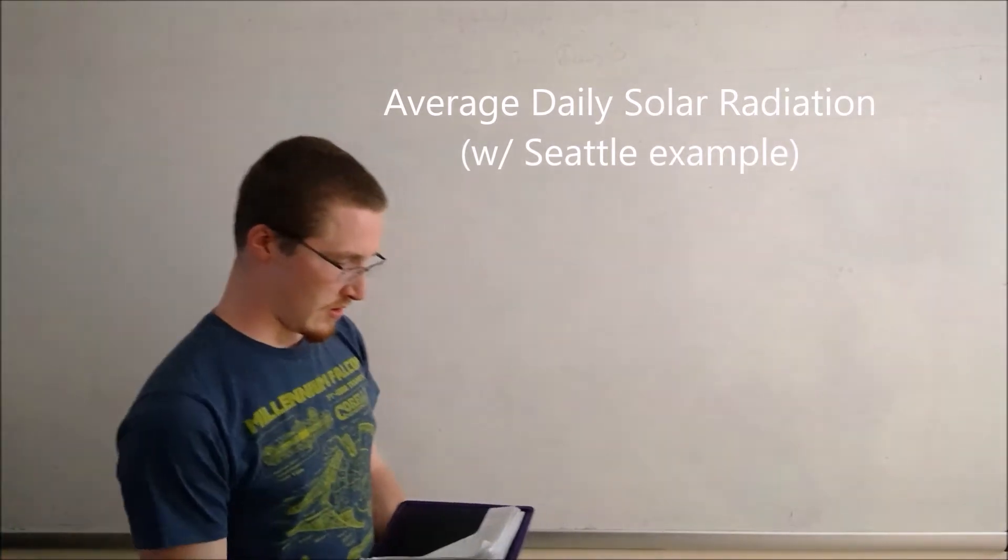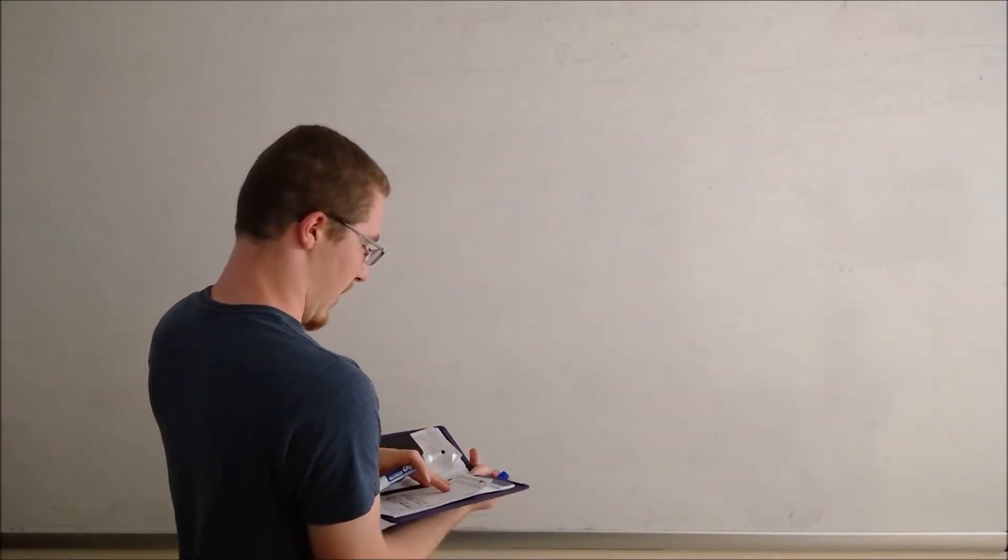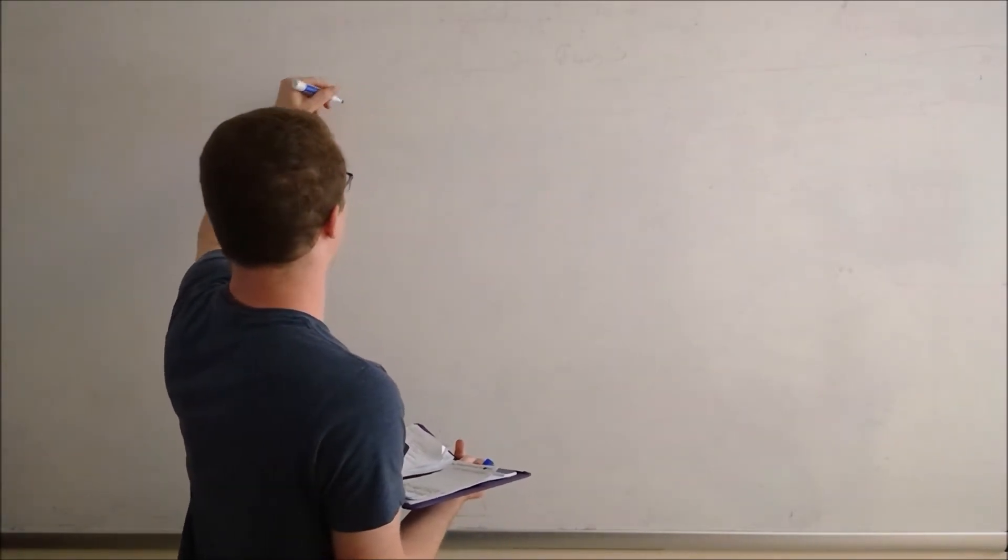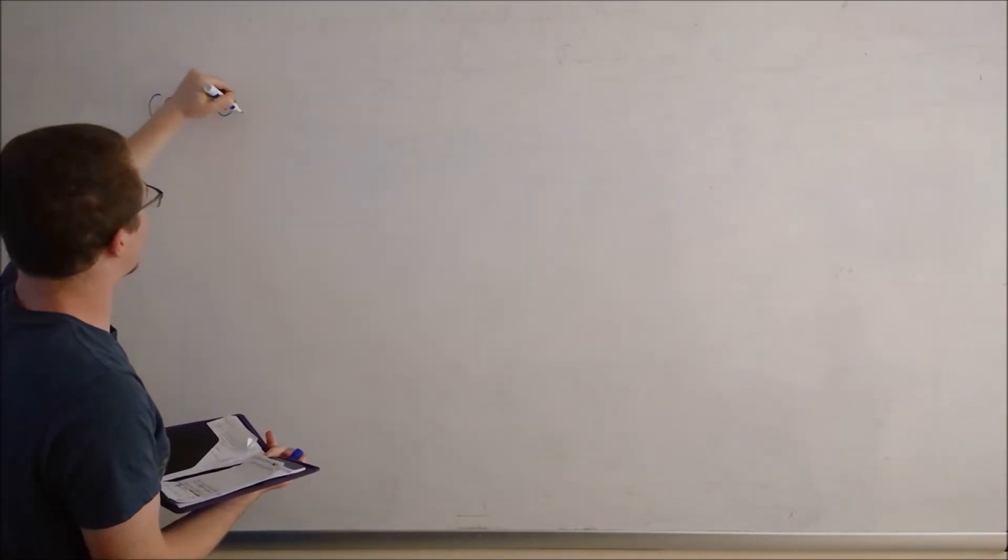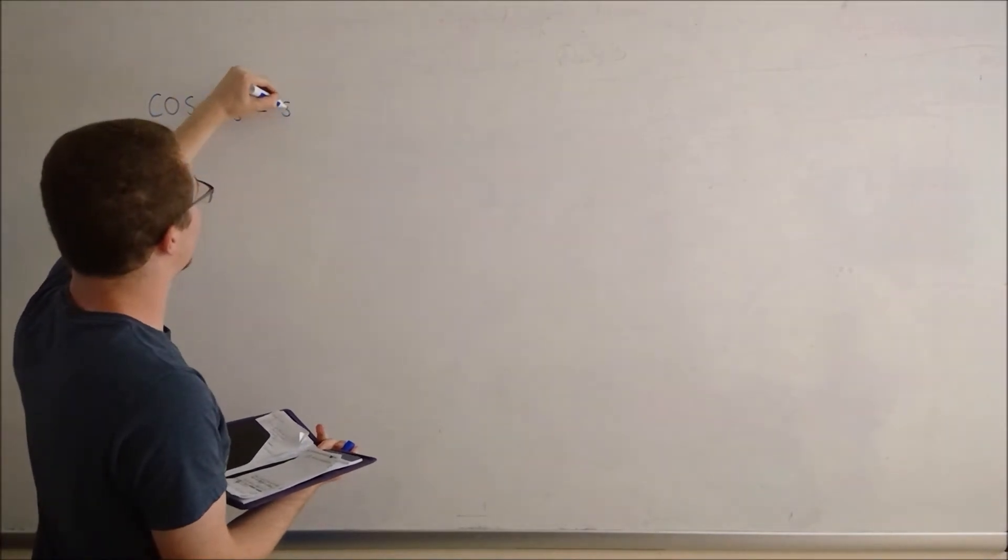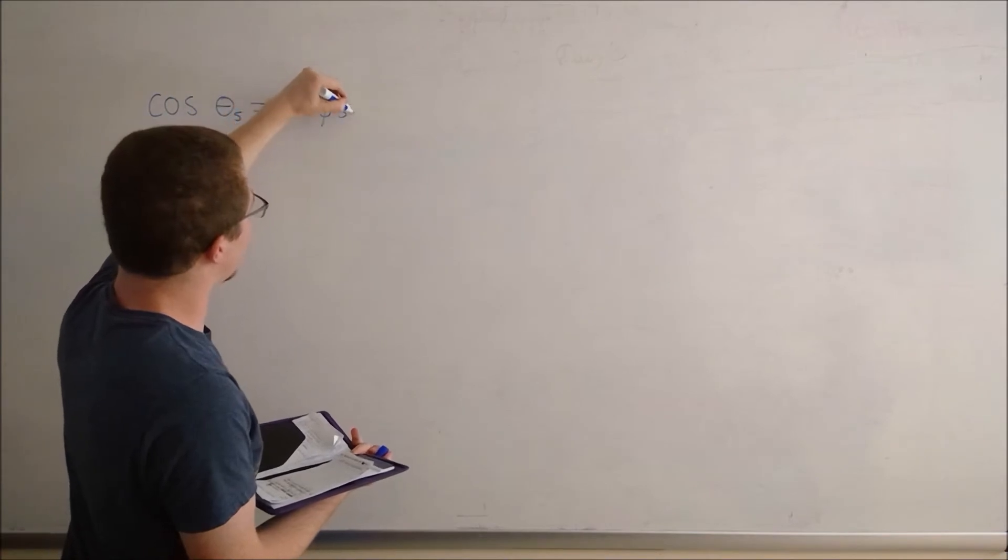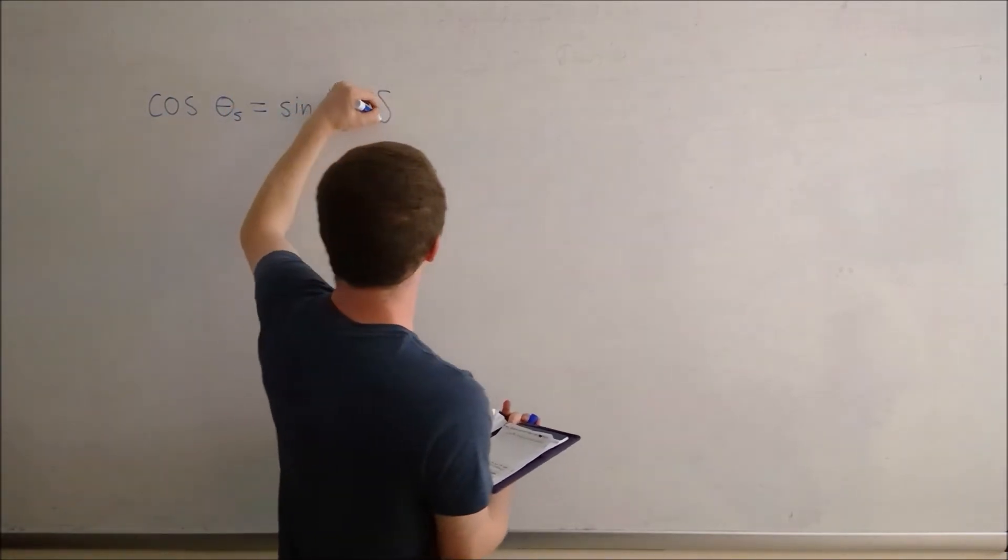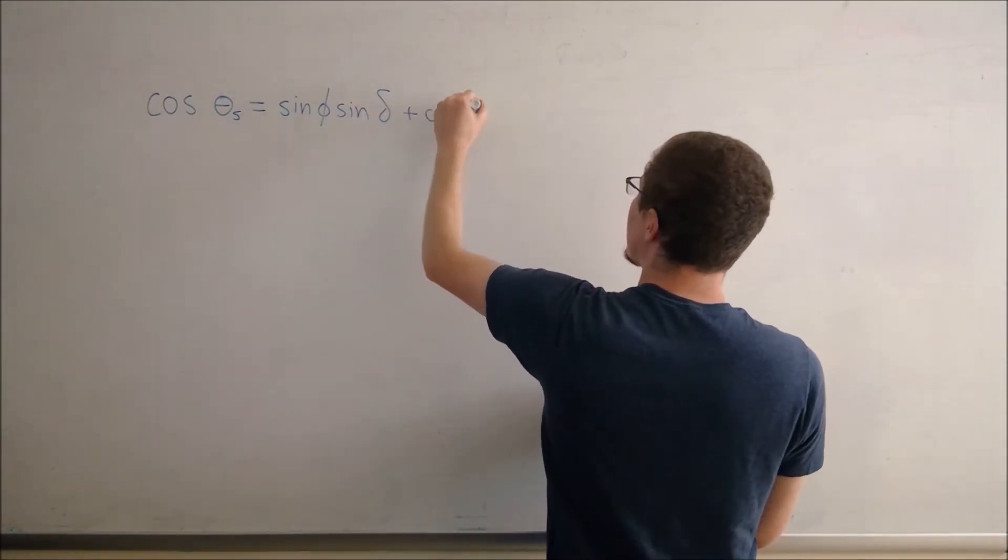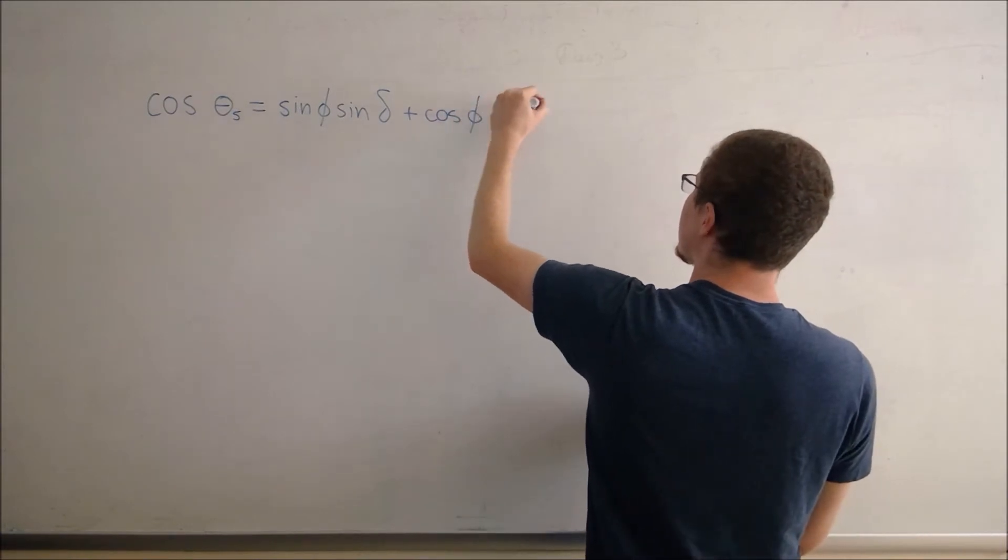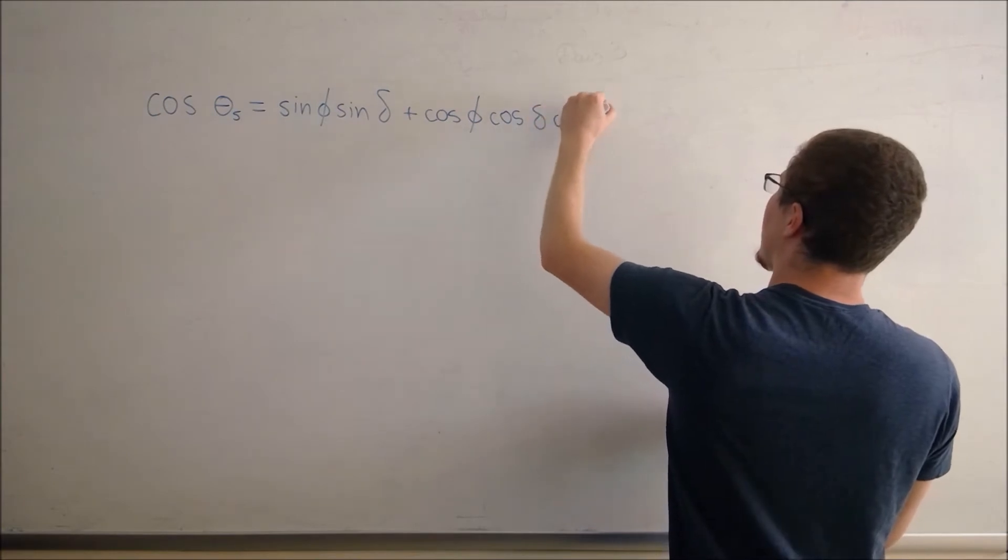So we will begin. We start with an equation for the solar zenith angle, given by theta s, which I will define in a moment here, times the sine of the latitude times the sine of the declination angle plus the cosine of both the same latitude and declination angle as well as times the cosine of the hour angle.